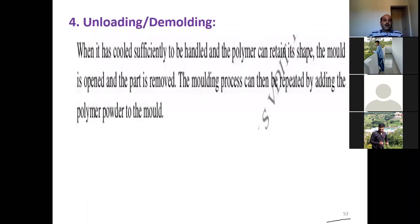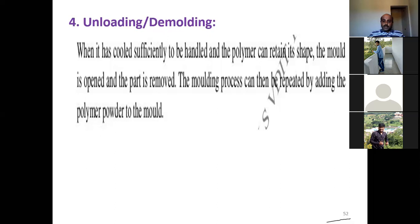The fourth and final step is unloading and demolding. Once the polymer has cooled sufficiently and can retain its shape, the mold is opened and the part is removed. The molding process can then be repeated by adding new material. This completes the rotational molding technique: preparing the mold, heating and fusion, cooling, and then unloading and demolding.